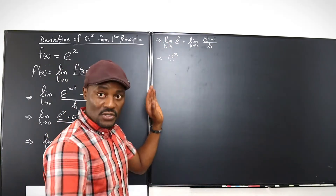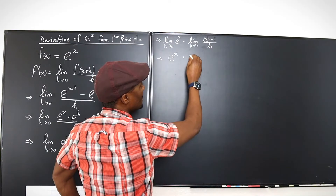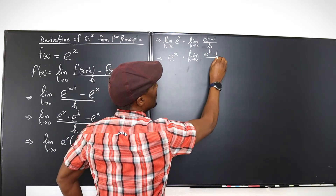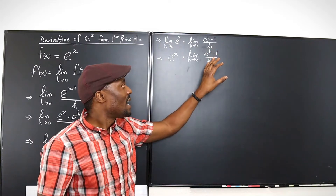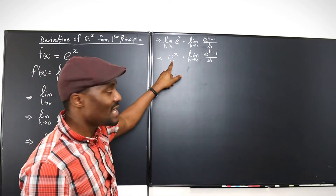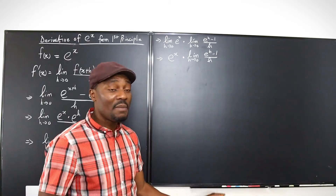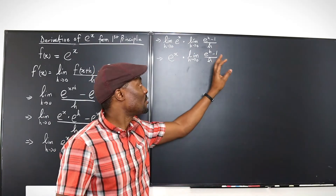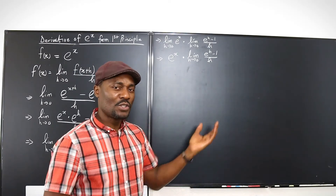So we get e to the x, because there's no h in this function — no matter what happens to h, e to the x stays the same. But on this side, we'll be multiplying by the limit as h goes to 0 of e to the h minus 1 over h. What will this give me? For our derivative to be e to the x, this limit must equal 1. I've seen people say this is itself an identity. By the time I'm done, we can all agree it is. The limit of e to the h minus 1 over h, as h goes to 0, will always be equal to 1. But I want to show you how that works out.